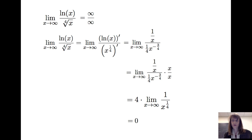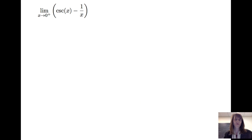So we've worked with what happens when we have a limit equal to 0 over 0 and need to apply L'Hôpital's rule multiple times, and here we've seen an example of the infinity over infinity indeterminate form. Let's consider another case. Let's look at the limit as x goes to 0 from the right of cosecant(x) minus 1/x.